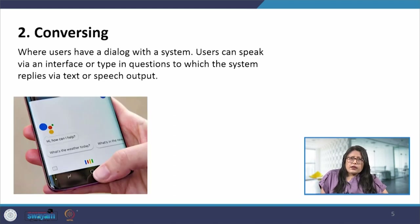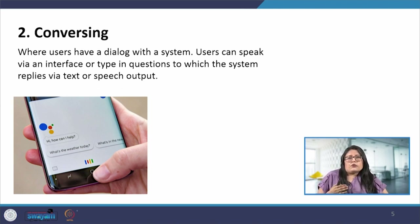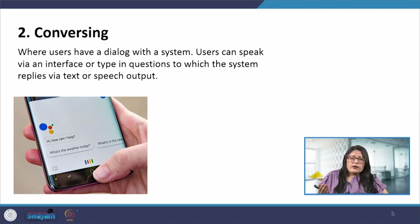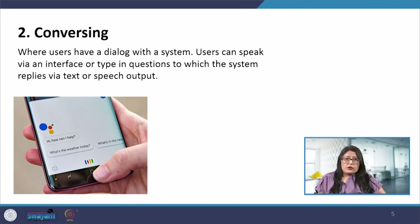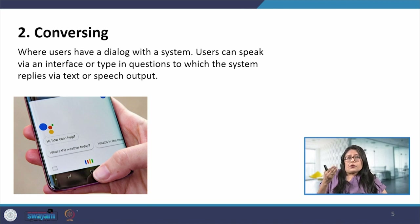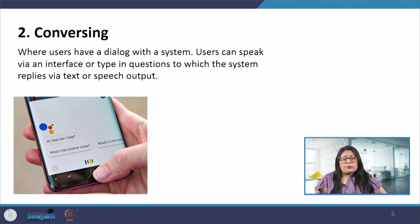Another way is conversing, where the user is conversing with the system and there is a dialogue. The user can speak through the interface or type a question, and the system will reply either in text or speech. Now systems are getting so smart, especially with the introduction of artificial intelligence, that the system understands and knows the needs and requirements and answers almost like a person who is conversing.